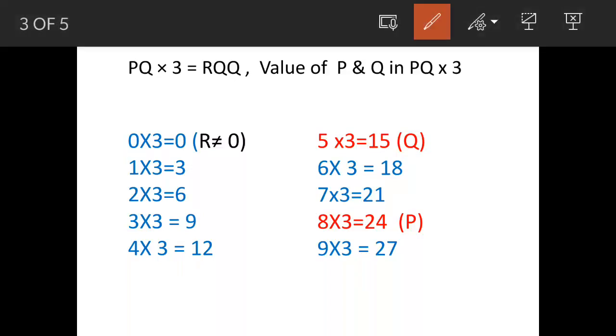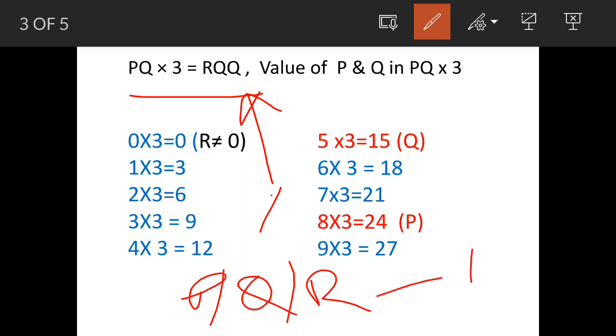In the question it is given PQ×3 = RQQ. Now we have to find out value of P and Q. So this is the equation actually, but this equation cannot be solved because it has got 3 unknowns: P, Q and R. There are 3 unknowns and the equation is only 1. So with one equation we cannot solve 3 unknowns. So we have to adopt method of trial and error.